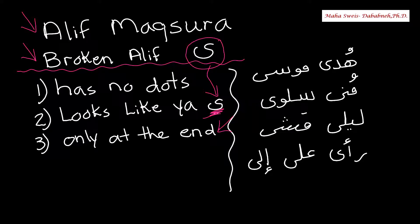Let me show you some examples. Female names: Huda, Muna, Layla, Salwa. You don't pronounce it as YAH — you pronounce it like Aleph. Huda, Muna, Layla, Salwa. It's like an AH sound at the end.